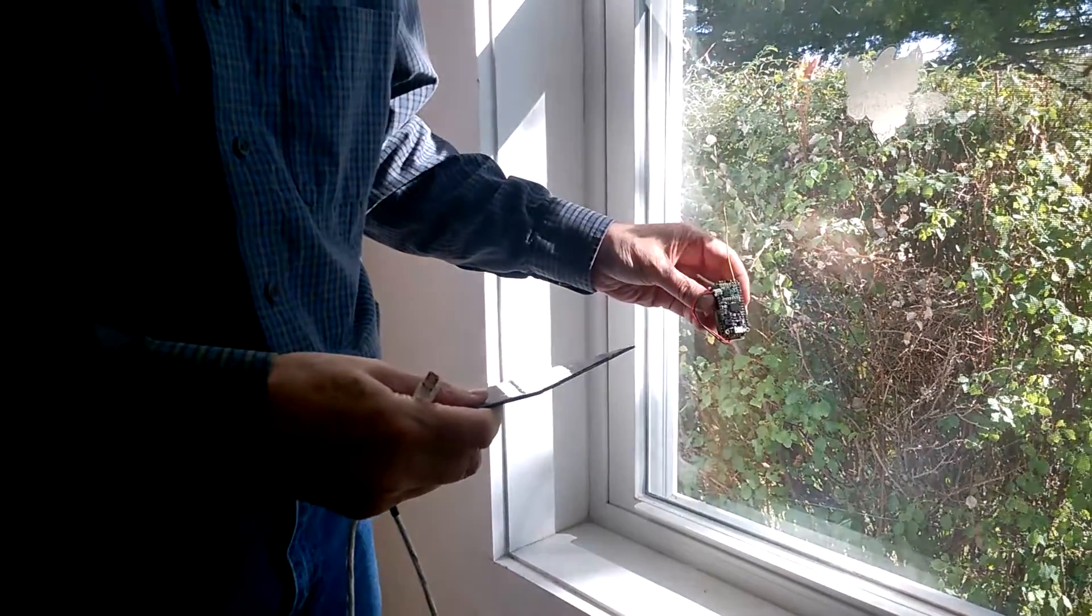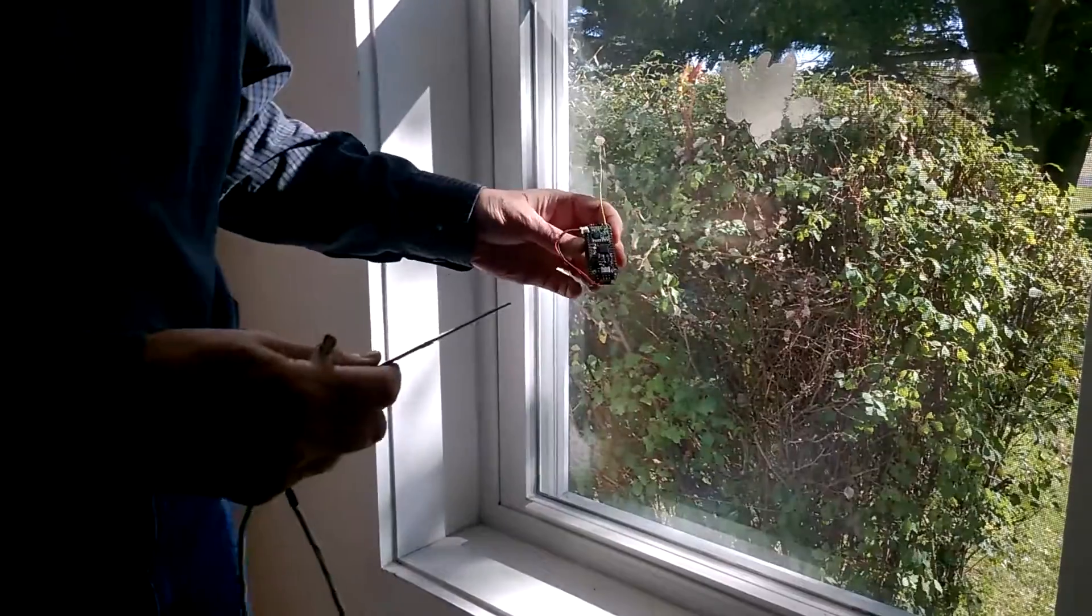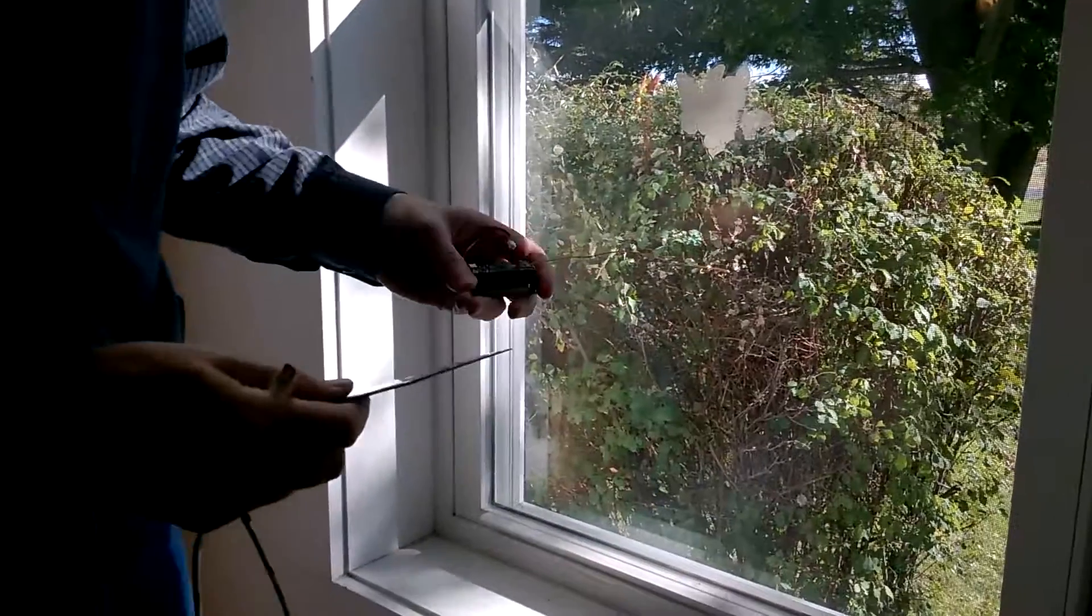This is a Catena 4401 LoRaWAN device for the Things Network. It's got a rechargeable battery, but as you can see next to my thumb, it's not yet plugged in.